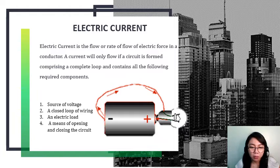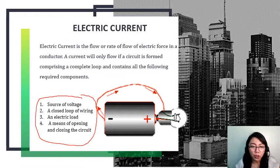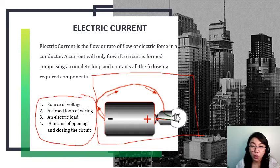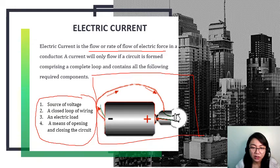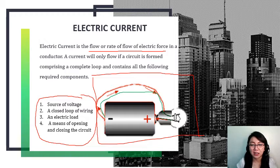A current will only flow if a circuit is formed comprising a complete loop and contains all the following required components: a source of voltage, a closed loop of wiring, an electric load, and a means of opening and closing the circuit — which is a switch. So if you notice, there's a loop. The flow of electric force comes from the source of voltage, then through the closed loop of wiring, the electric load, and the switch to open and close the circuit. That's basically electric current.